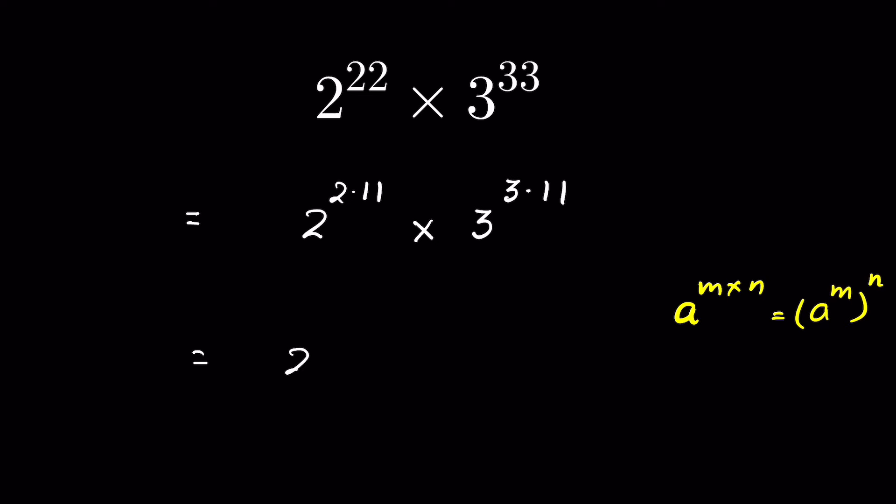So this will be 2 to the power 2 whole to the power 11, then times 3 to the power 3 whole to the power 11.